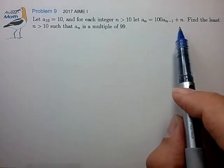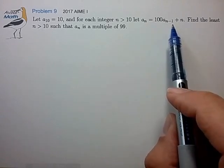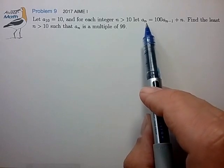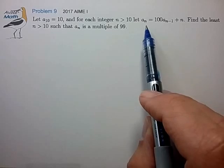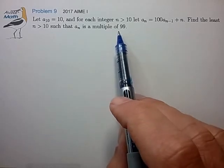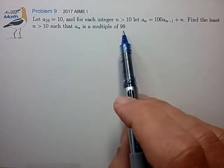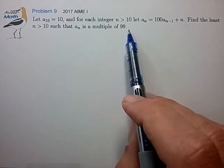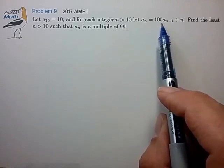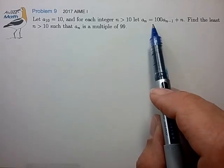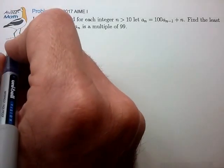We have this recursion relationship defining the values of a sub n in terms of a sub n minus 1, and we're looking for the condition where a sub n is a multiple of 99. So analyzing this equation in mod 99 is the way to go because we're looking for the case where this equals 0 in mod 99, and also this coefficient of 100 is conveniently equal to 1 in mod 99. So let's analyze this in mod 99.